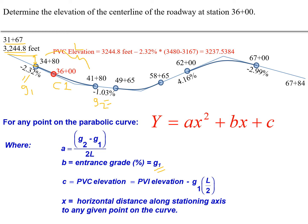Typically you're given the PVI elevation, but in this case we weren't, so we use a different approach with the values we have. Starting with the given elevation of 3244.8 feet at station 31 plus 67, we travel down the grade of 2.32 percent over the distance between that starting point and the PVC station at 34 plus 80. This gives us a PVC elevation of 3237.5384 feet.